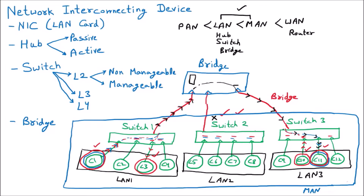We are now learning about the next network device, which is the router. The router is the WAN device — that is, the wide area network device. Whenever you are talking about any WAN, you should understand that there is for sure a router present there.